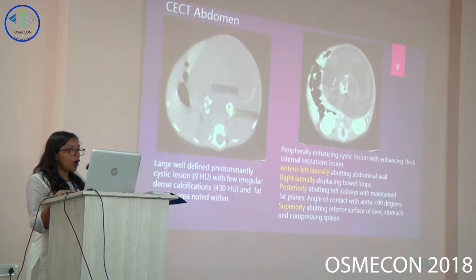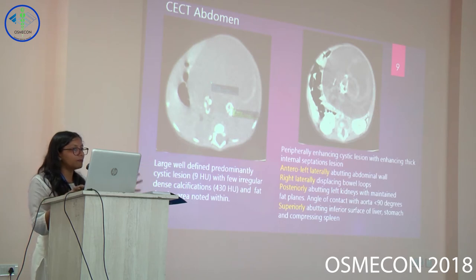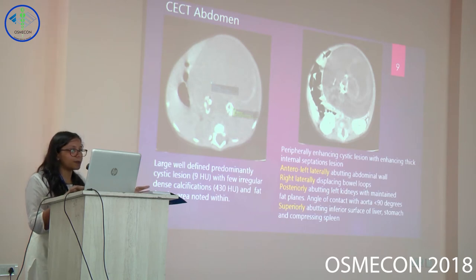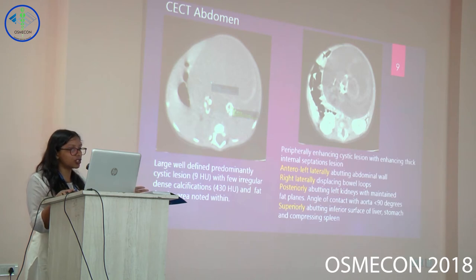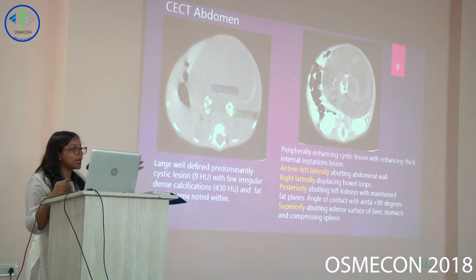On CT abdomen, the first image is a plain axial section showing a large, well-defined, predominantly cystic lesion with few irregular calcifications and dense fatty areas. The second image is a contrast axial section showing peripherally enhancing cystic lesions. Laterally on the left side, it is abutting the abdominal wall; right laterally, we can see displacement of the bowel.